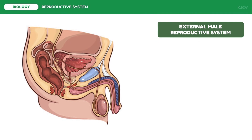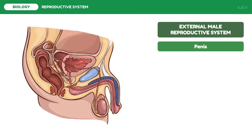Now let us discuss the external male reproductive system. The main external reproductive organ of males is the penis. It is important to note that the penis is not the main reproductive organ of males. The penis only functions for sexual intercourse — to deposit the sperm-containing seminal fluid inside the female reproductive tract. For the penis to function during sexual intercourse, it needs to be erect.